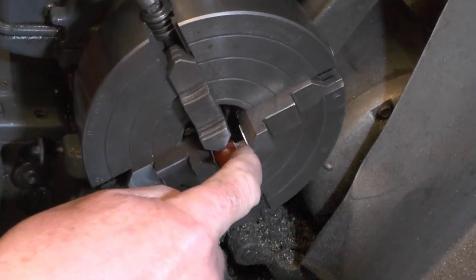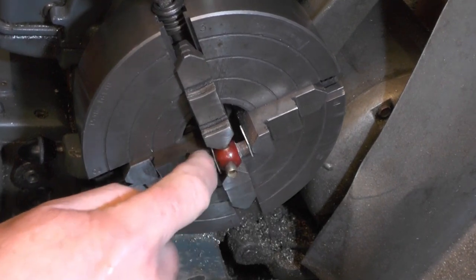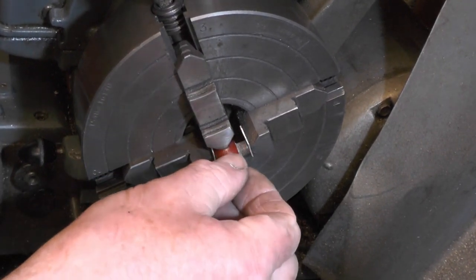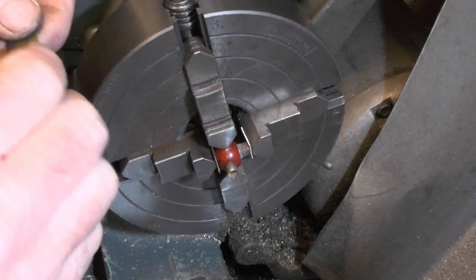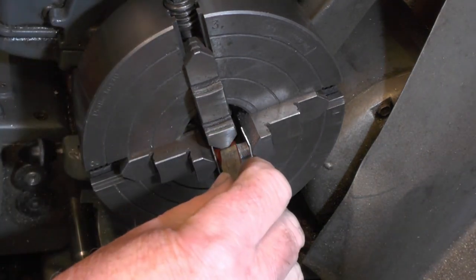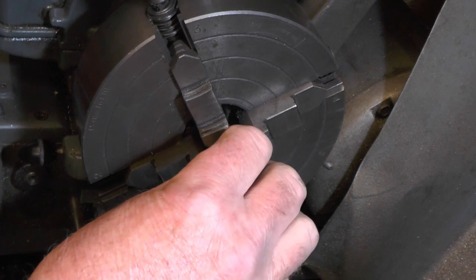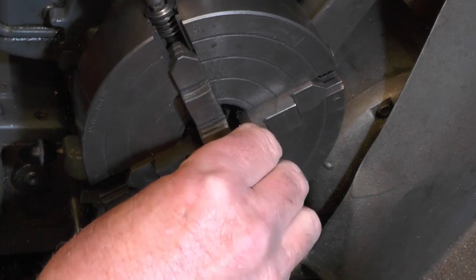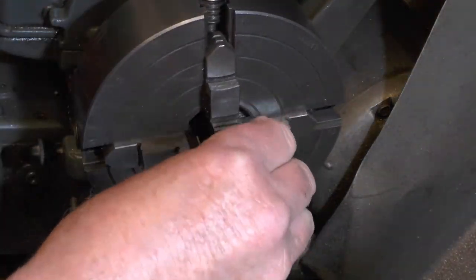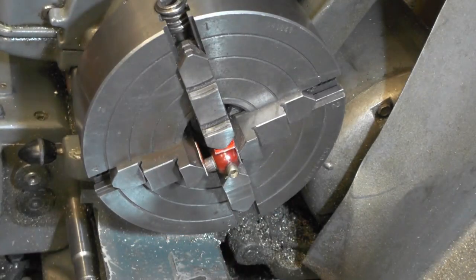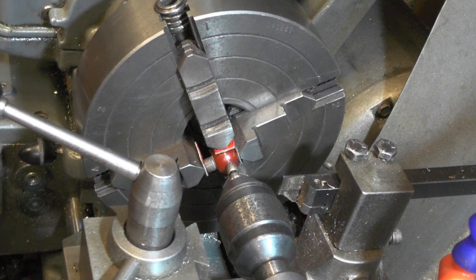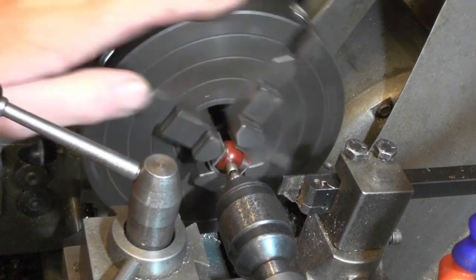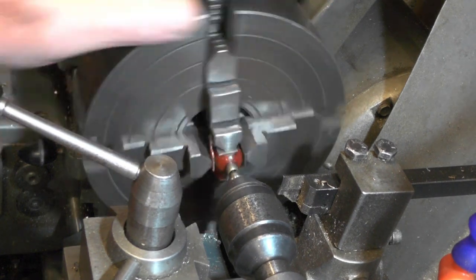I'm just going to set this up in a four-jaw chuck. As I'm clamping the jaws to the actual valve, I'm just making sure I put some packing underneath so I don't damage the valve. Then just to give me a guide, I'll put my center up to it and roughly set it up to the center.